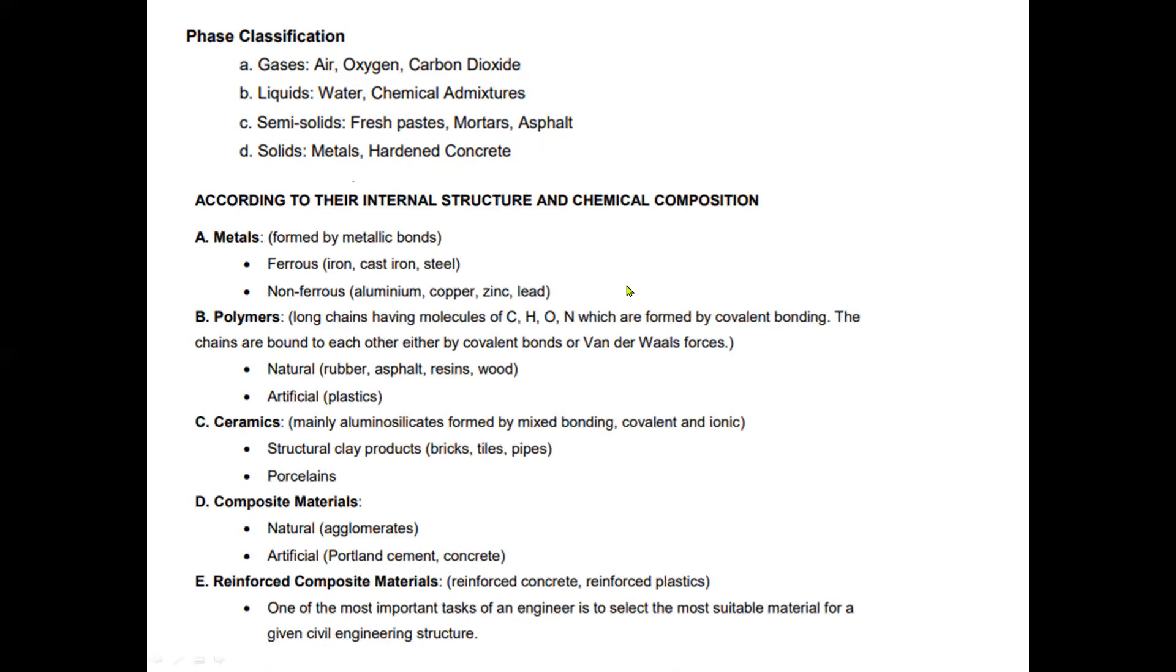According to their internal structure and chemical composition: Metals formed by metallic bonds. Ferrous: iron, cast iron, and steel. Non-ferrous: aluminum, copper, zinc, and lead. Polymers: long chains having molecules of C, H, O, and N which are formed by covalent bonding. The chains are bound to each other either by covalent bonds or Van der Waals forces. Natural polymers: rubber, asphalt, resins, and wood. Artificial: plastics.